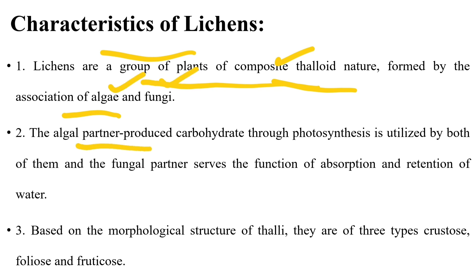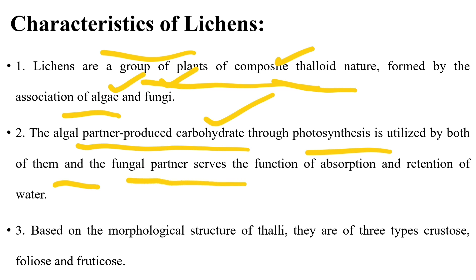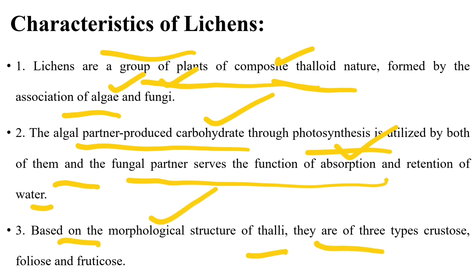Characteristics of lichens: lichens are a group of plants with a composite thaloid nature, formed by the association of algae and fungi. The algal partner produces food or carbohydrates by photosynthesis, which is utilized by both algae and fungi. The fungal partner performs absorption of food and retention of water.